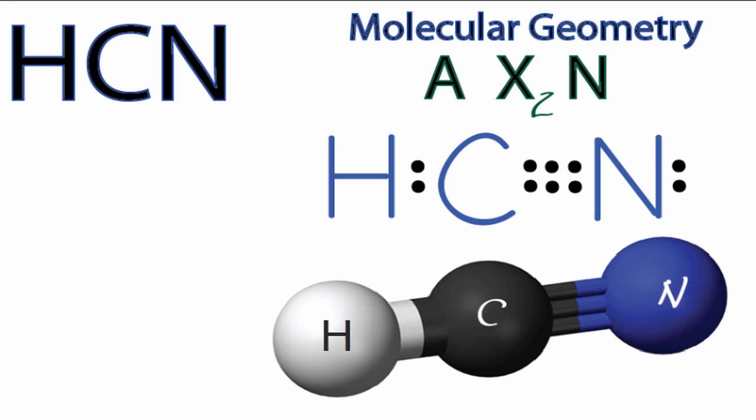And N, that would be the number of lone pair electrons, or non-bonding electron pairs. All of the electrons around the carbon atom, they're involved in chemical bonds, so we can just forget about N.